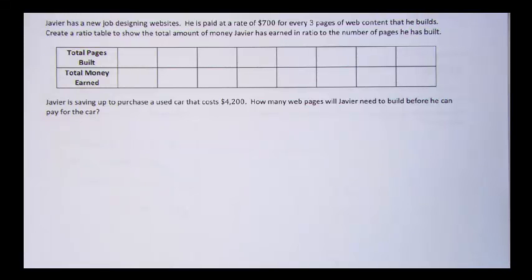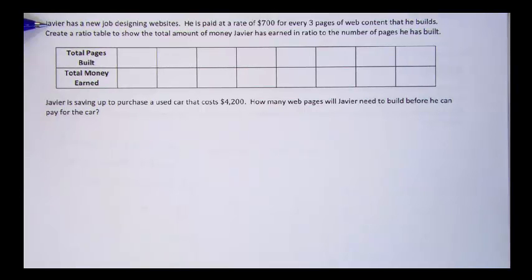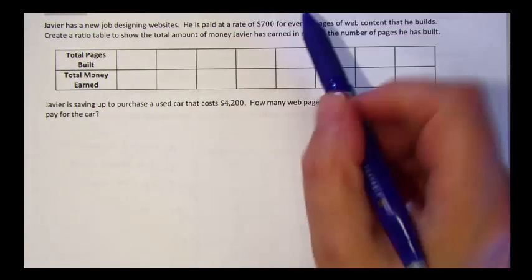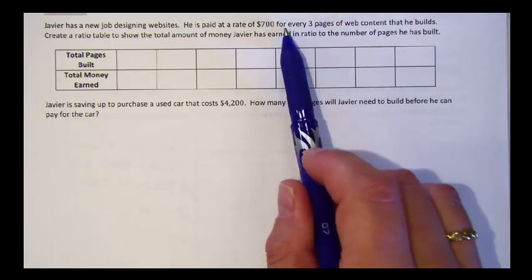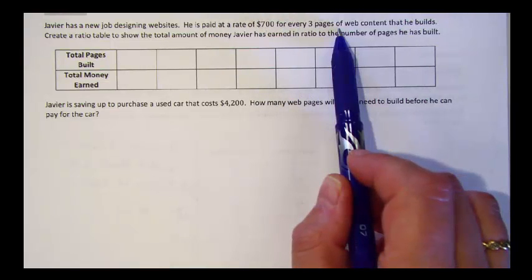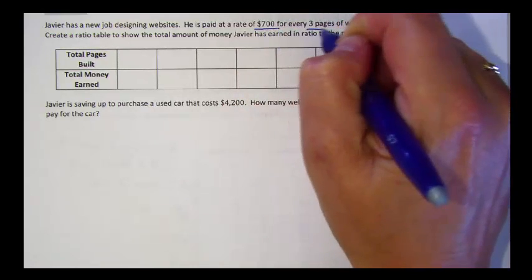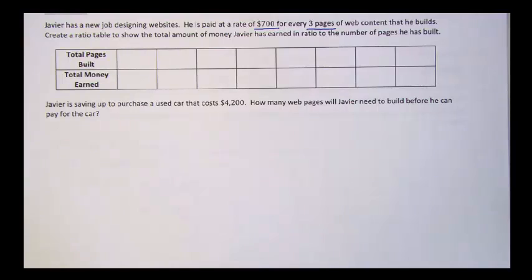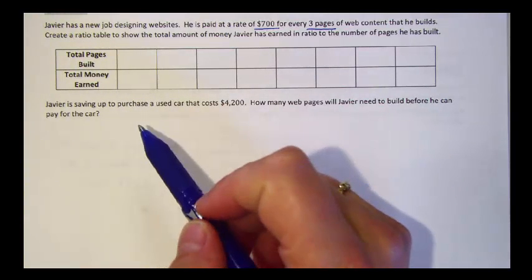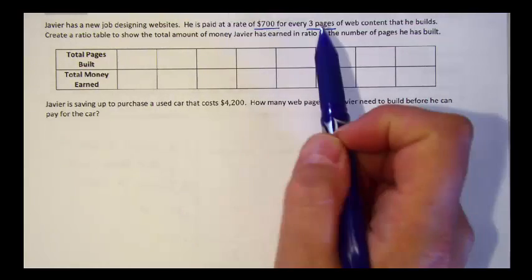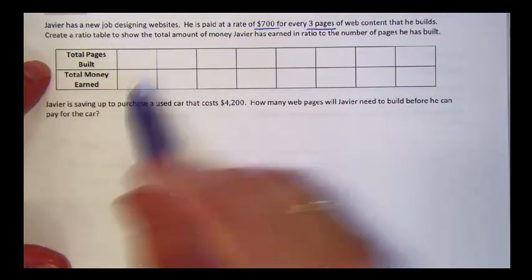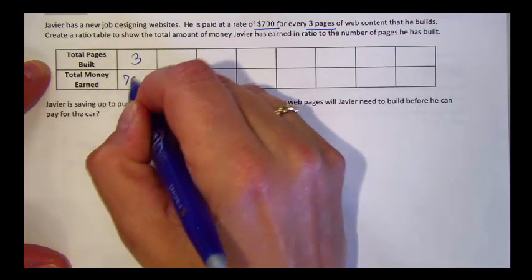Here's another example where we can create a table using equivalent ratios. Javier has a new job designing websites. He is paid at a rate of $700 for every three pages of web content that he builds. So here's our ratio: $700 for every three pages of content he builds. We can enter that into the table because there isn't a smaller whole number ratio. We can't divide 700 by three. So if he builds three pages, he gets paid $700.